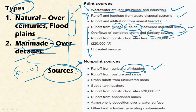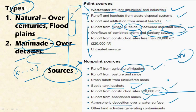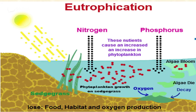Non-point sources include runoff from agriculture and irrigation, which is the major source of nutrient addition causing eutrophication, as well as runoff from pastures, urban runoff from unsewered areas, septic tank leakages, runoff from construction sites over 20,000 square meters, runoff from abandoned mines, and atmospheric deposition — for example, nitrogen deposited to the atmosphere through burning of fossil fuels that reaches water bodies via rain.